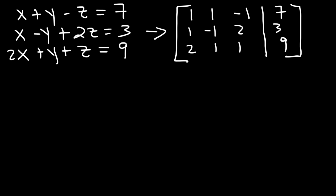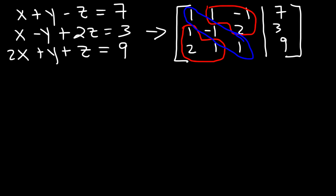What we need to do is make sure that the off-diagonal entries are zeros, and that the three numbers forming the main diagonal are ones only. In that form, it will be in reduced row echelon form, and whatever numbers appear on the right side will be the values of x, y, and z.